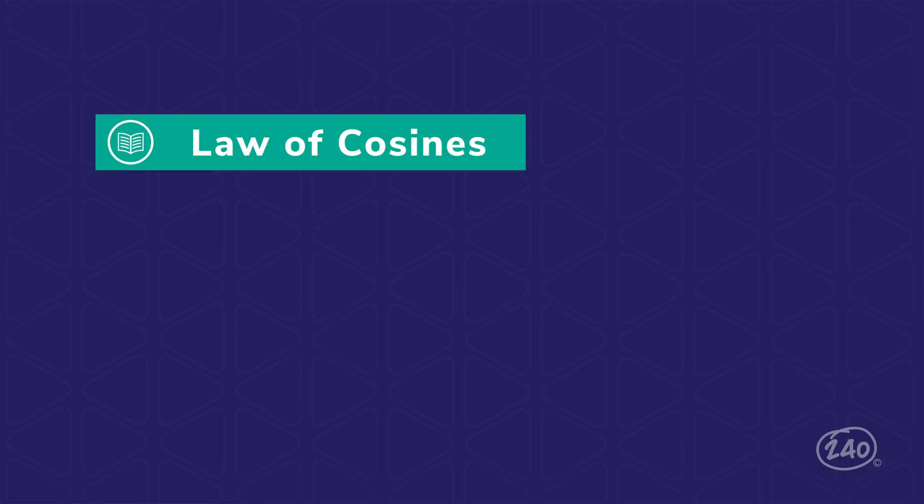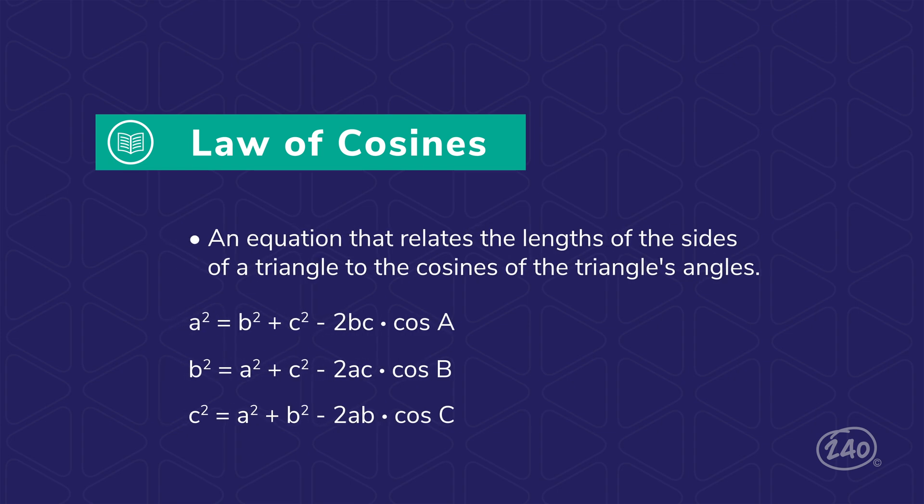Similarly, the law of cosines is an equation that relates the lengths of the side of a triangle to the cosines of the triangle's angles. This law can be used for any triangle and is useful to find the third side of a triangle when two sides and the angle between them is known, and to find the angles of a triangle when you know all three side lengths. Now, this law comes with not one, but three equations depending on the side in question. You should also familiarize yourself with these.